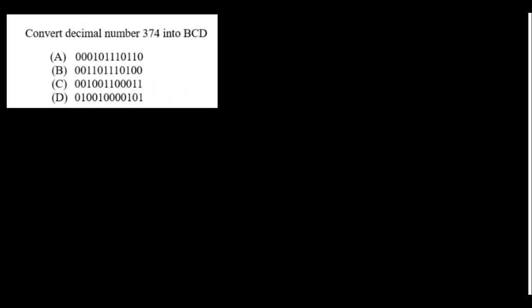Convert decimal number 374 to BCD: 3 = 0011, 7 = 0111, 4 = 0100. So the BCD representation is 0011 0111 0100. Option B is the right answer.